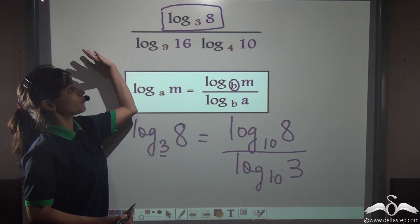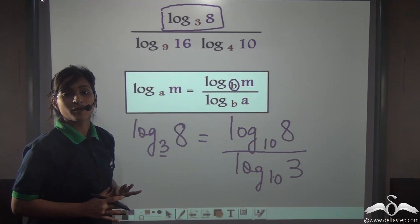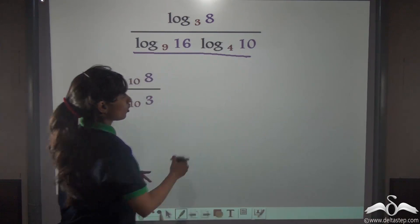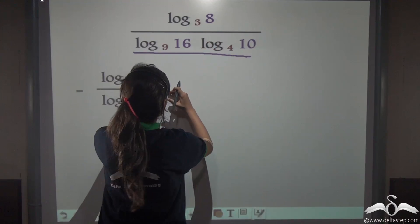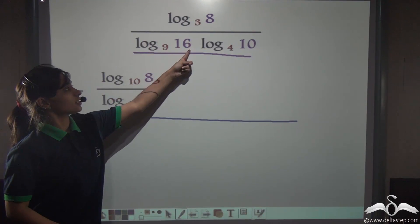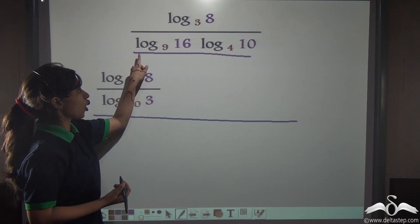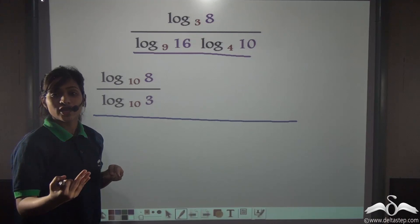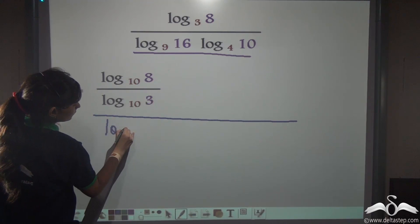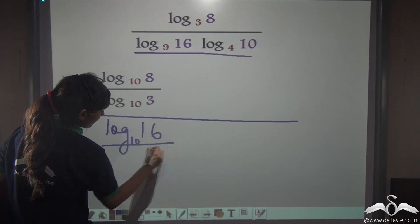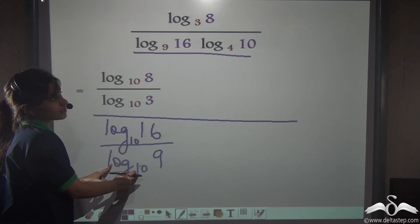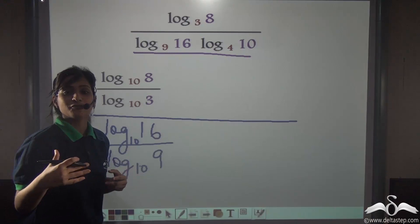Like this we will change all these logs to the base of 10. We have already done the numerator. Now we will do the denominator part also. This is in the denominator, so it shall be written as this divided by this. After changing the base of log 16 to the base 9 to log base 10, it becomes log 16 to the base 10 by log 9 to the base 10. Similarly, log 10 to the base 4 — change it to log of base 10.